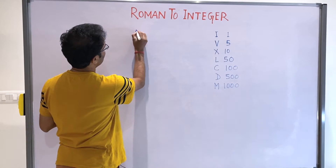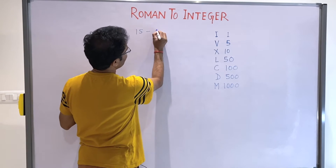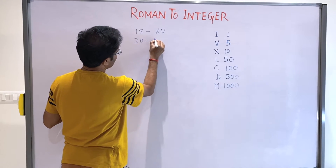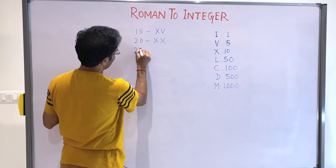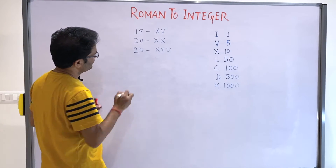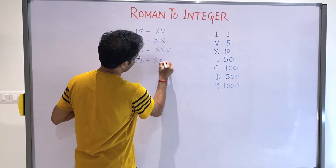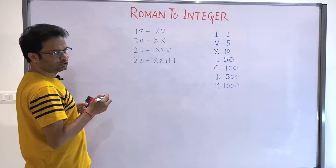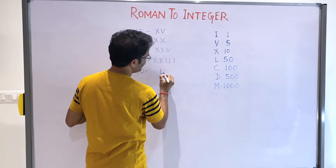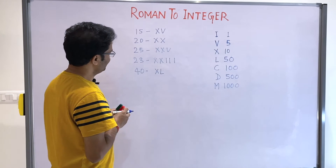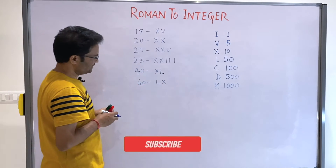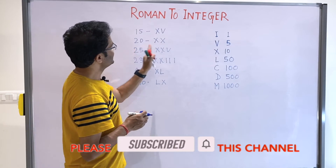You might already know this. Suppose you have 15 — you write 10 and then 15. If you have to write 20, that is X. For 25, you write XX and this one. For 23, you write X, X, I — this is 3, right? For 40, we do not have a direct symbol, so we take 50 and minus X, which becomes 40. And for 60, it is L and X — this is how you make integer to Roman.